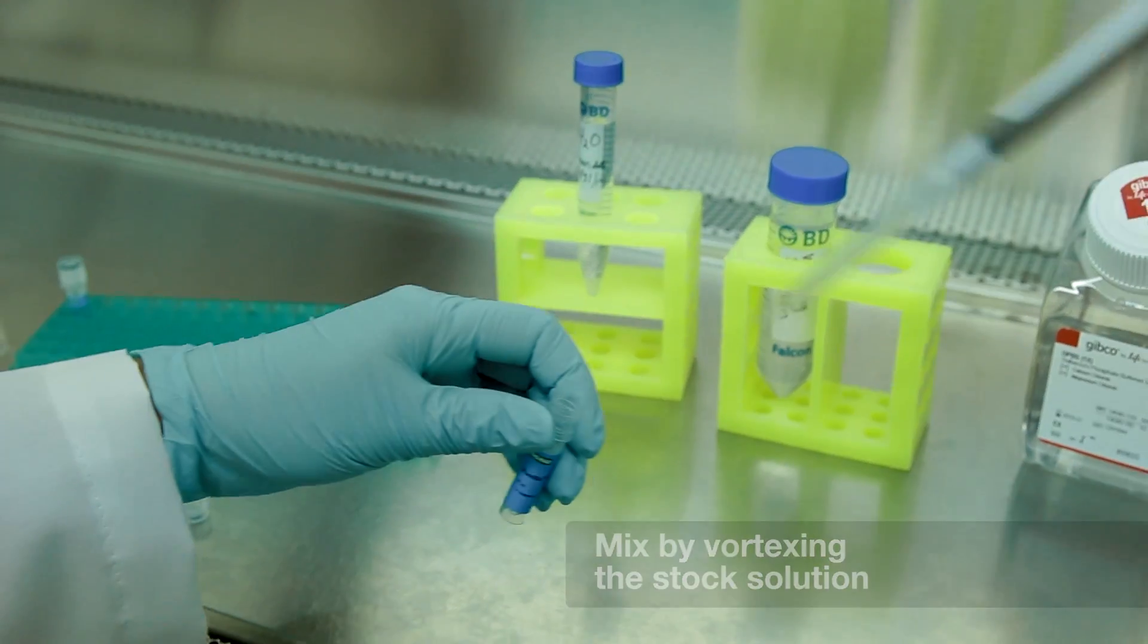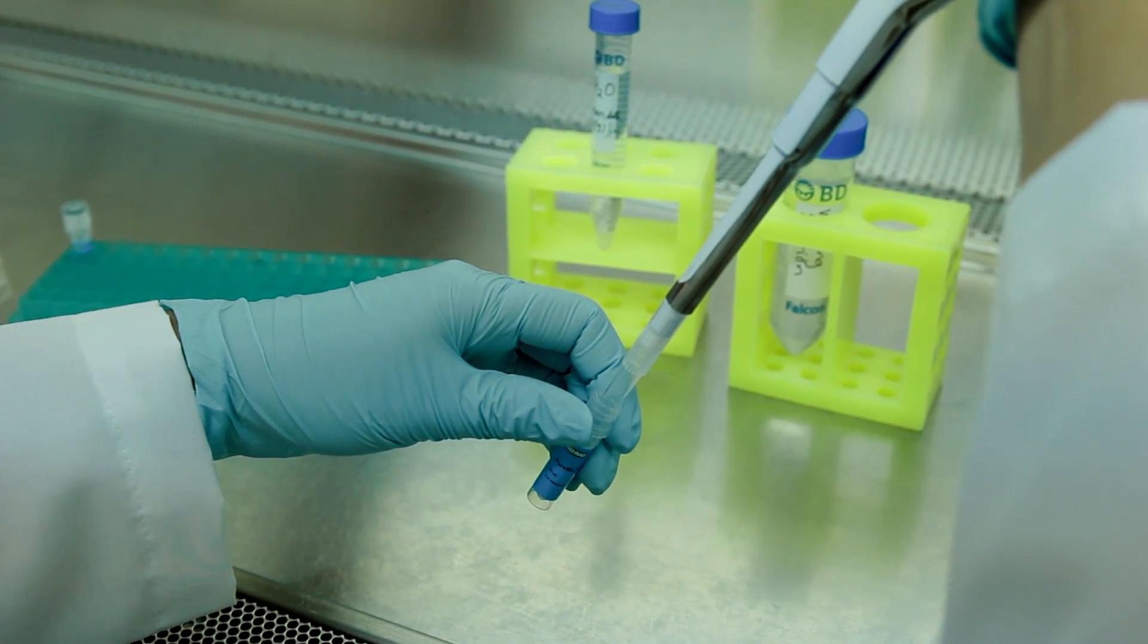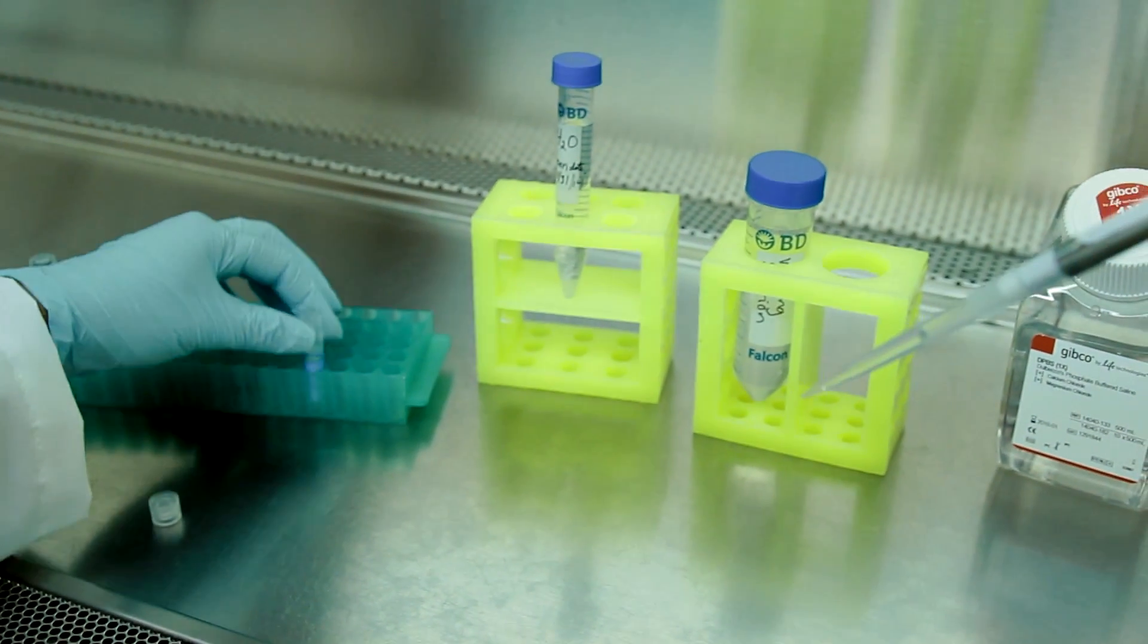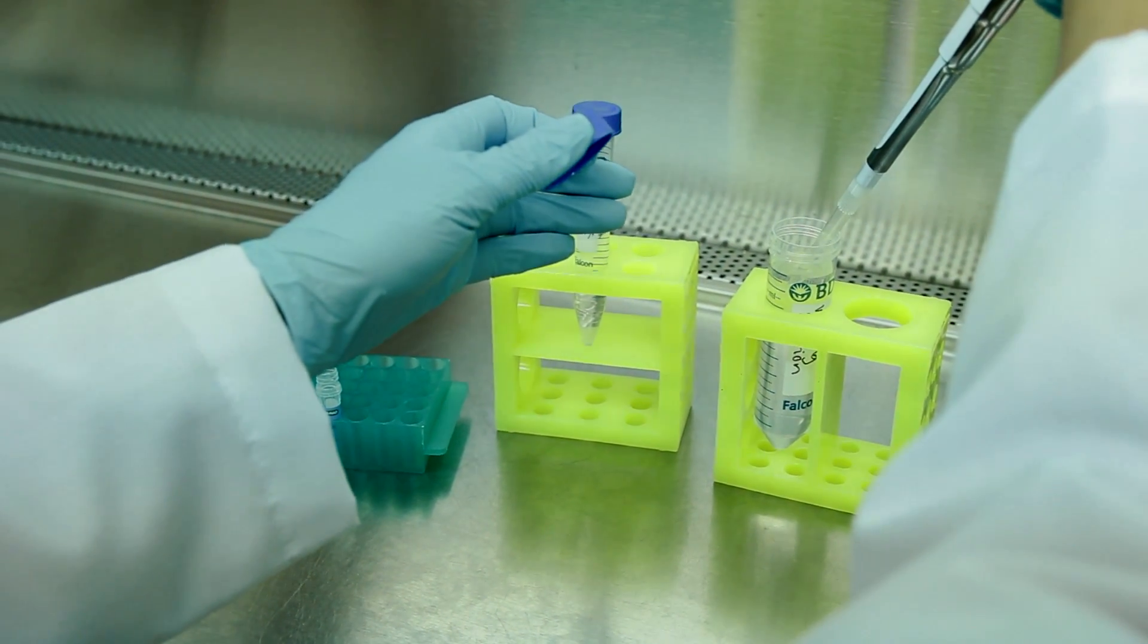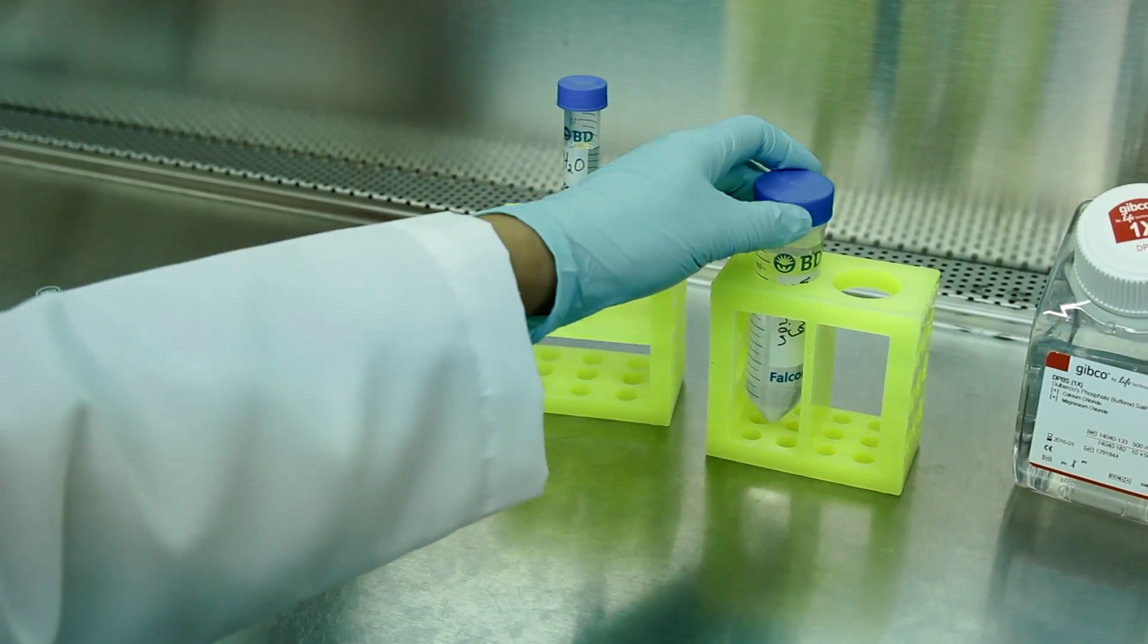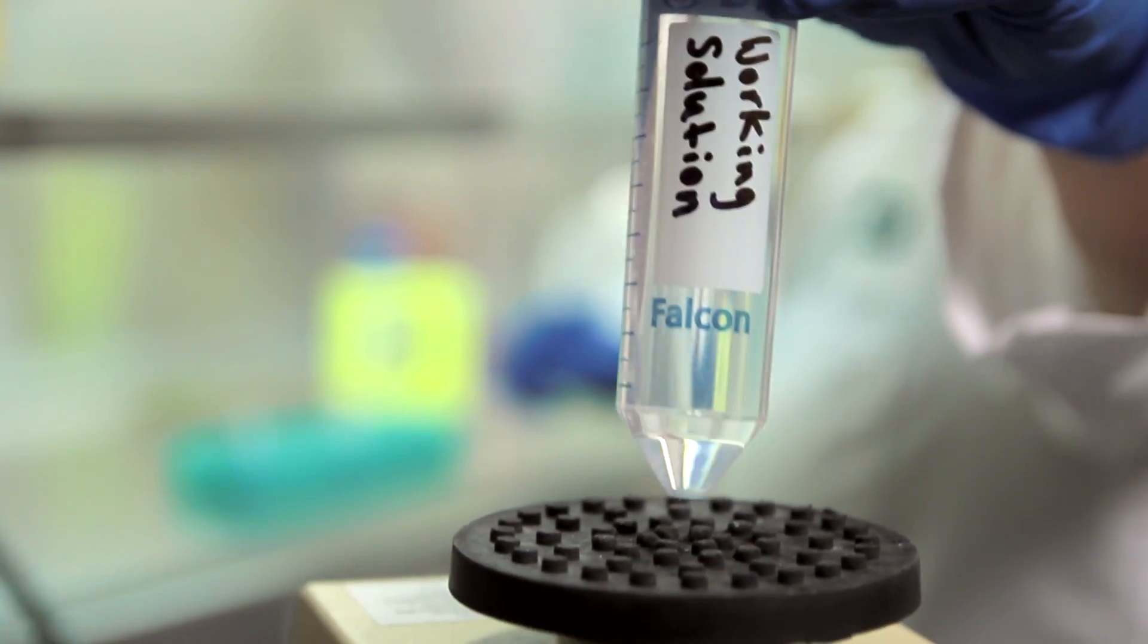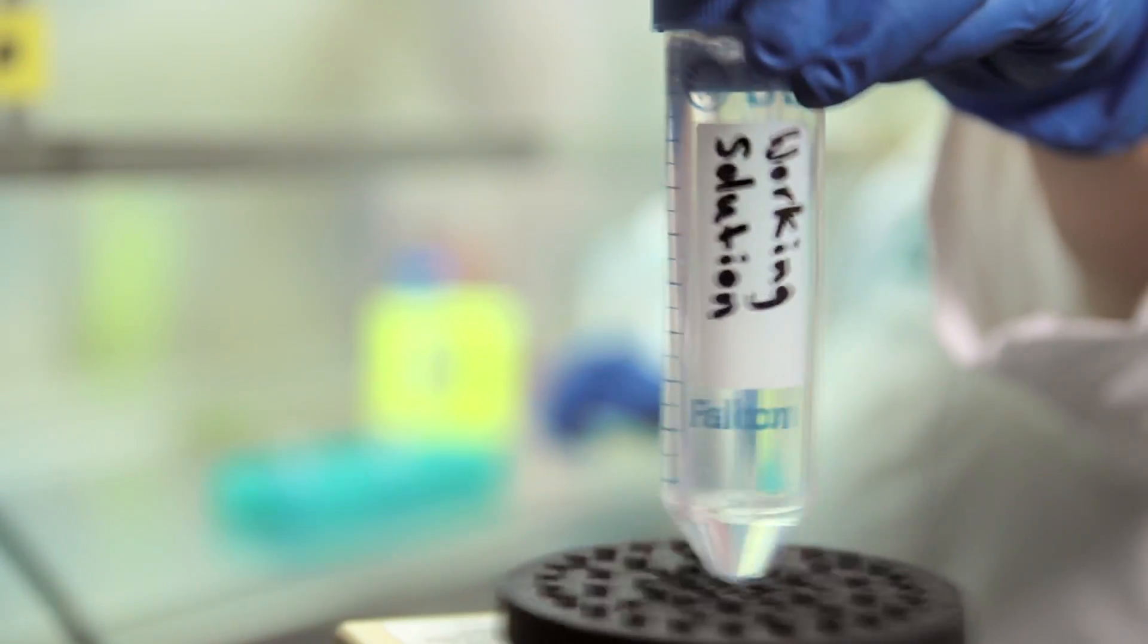Add the 500 microliter stock solution to a 50 ml conical tube containing 49.5 ml of 1x PBS to generate the 1 microgram per ml working concentration. Then, mix by vortexing and set the solution aside.